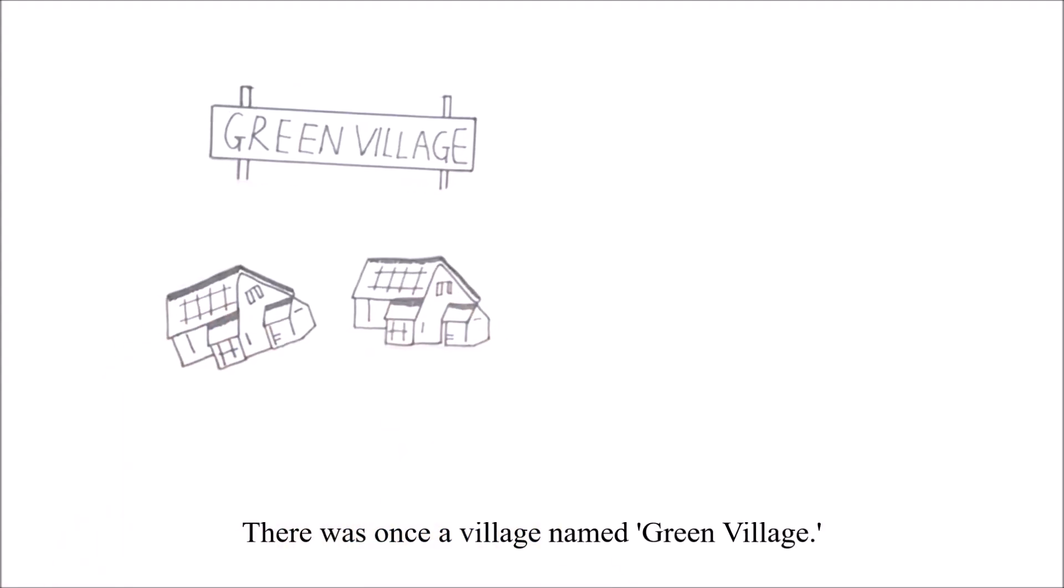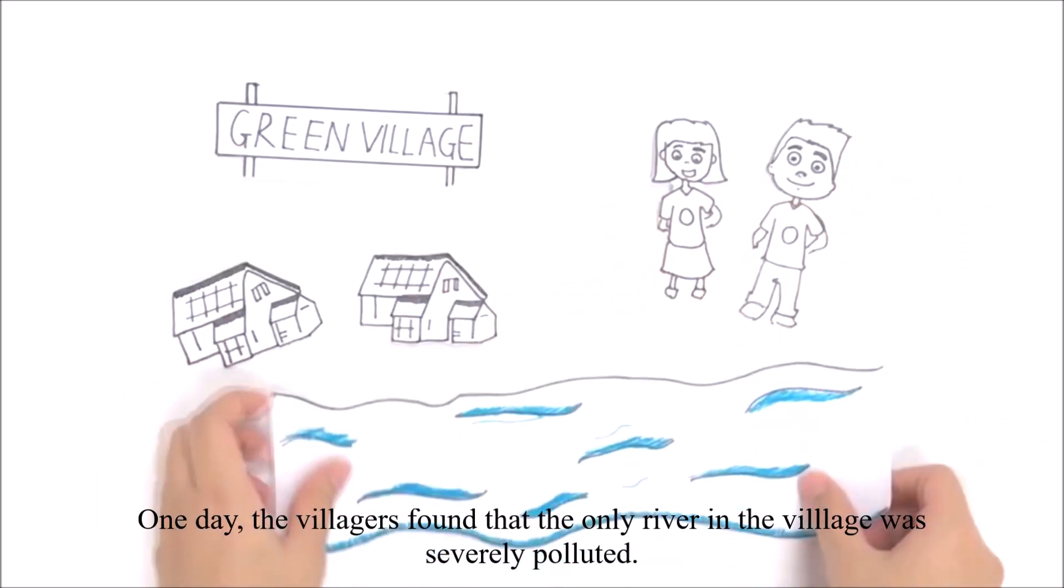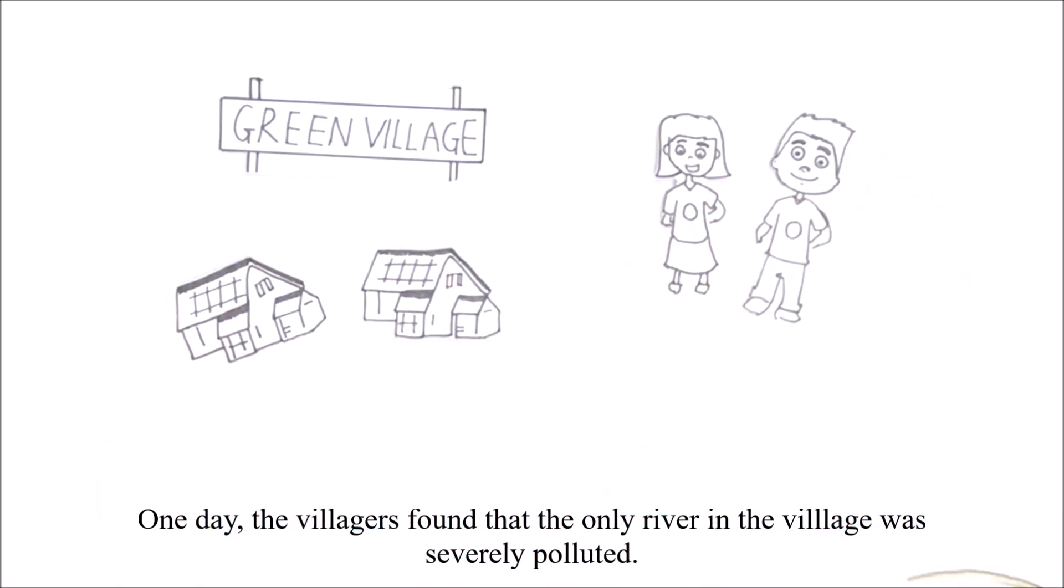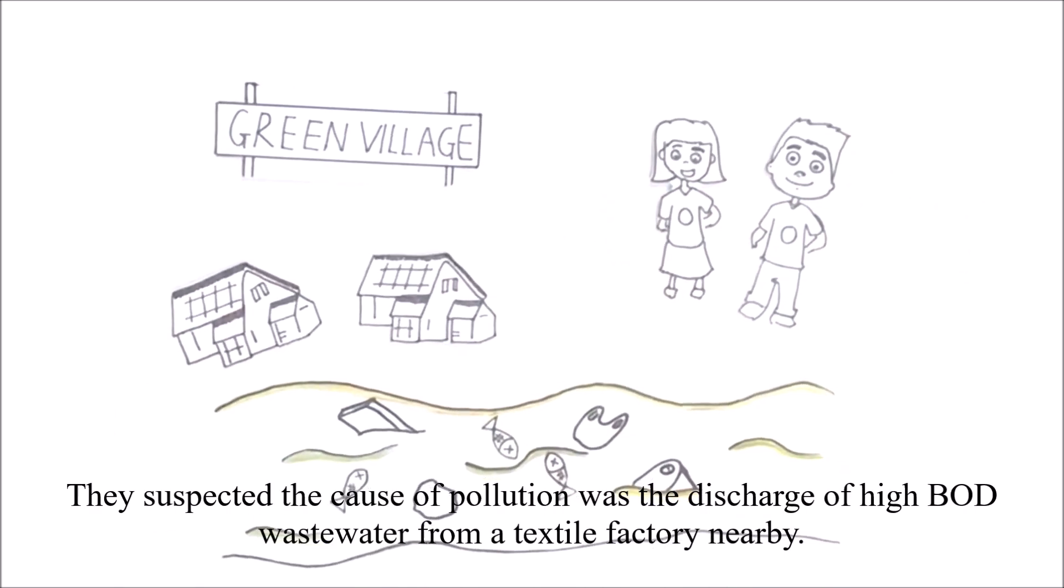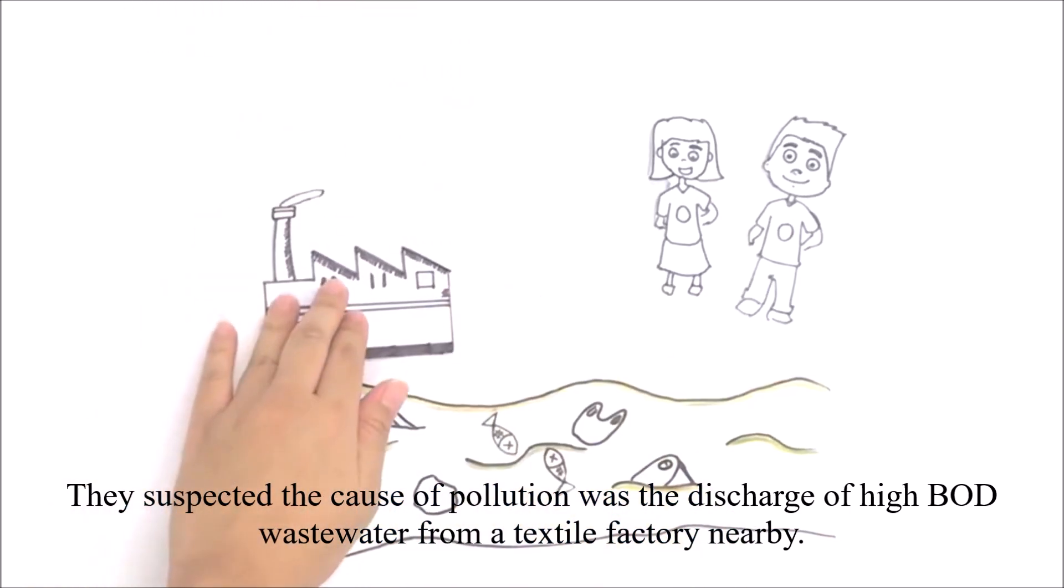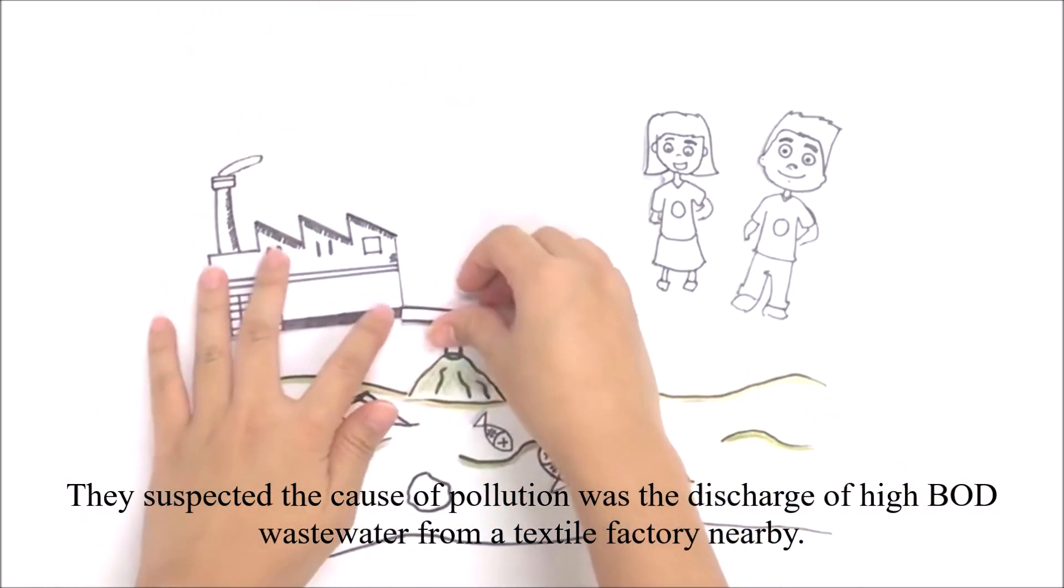There was once a village named Green Village. One day, the villagers found that the only river in the village was severely polluted. They suspected the cause of the pollution was the discharge of high BOD wastewater from a textile factory nearby.